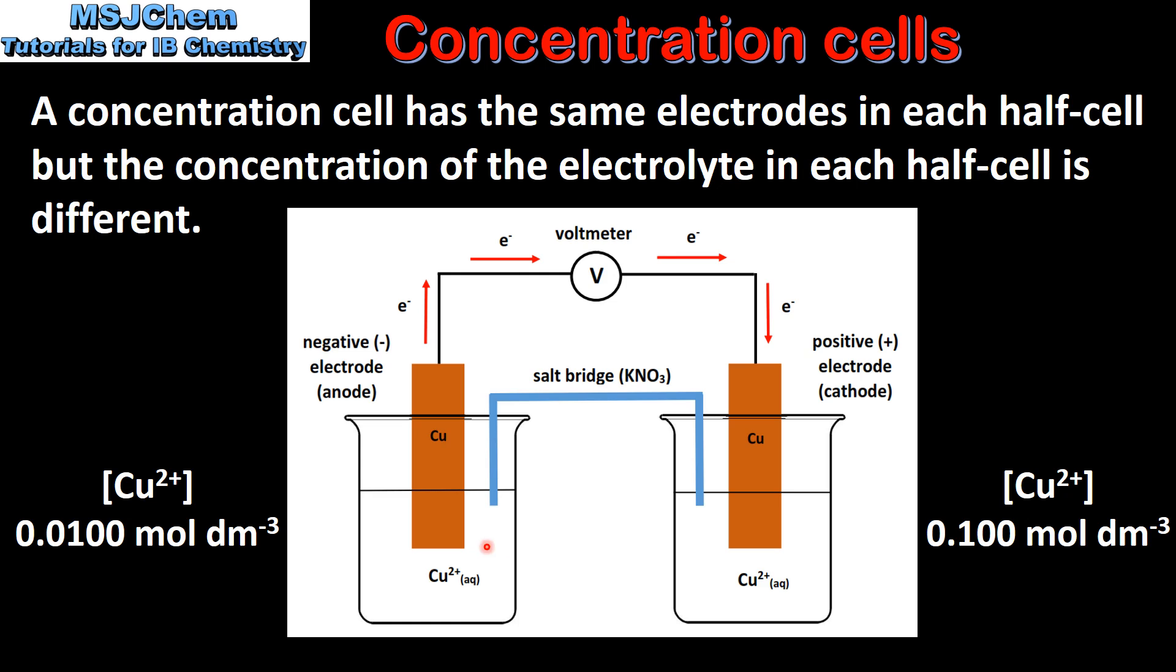This concentration cell is made of two copper half cells. In both half cells the electrode material is copper, but the concentration of the electrolyte in each half cell is different. In the half cell on the left, which is the anode, we have a concentration of 0.0100 mole per decimeter cubed. In the half cell on the right, which is the cathode, we have a concentration of 0.100 mole per decimeter cubed.